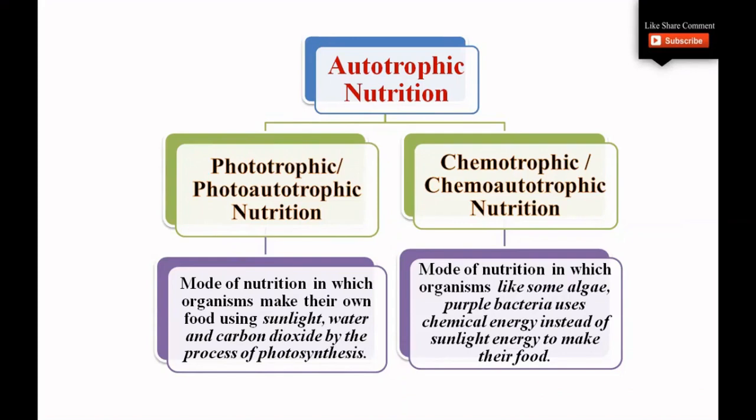Phototrophic nutrition is the mode of nutrition in which organisms make their own food using sunlight, water, and carbon dioxide by the process of photosynthesis. Chemotrophic nutrition is the mode of nutrition in which organisms use chemical energy instead of sunlight to make their food.